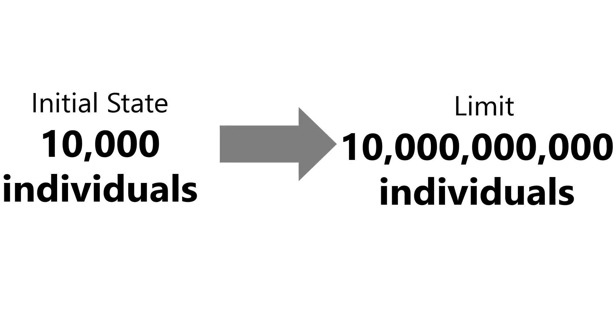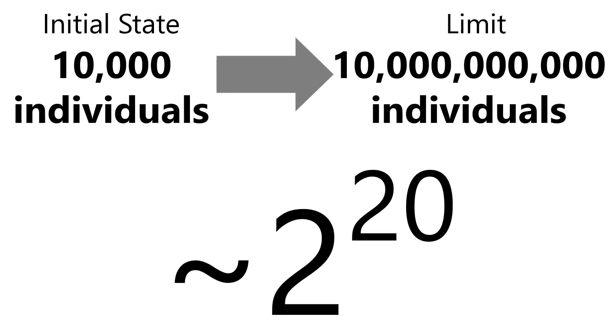To give some real cases: the number of doublings for the human population. The lowest point in the number of humans we've ever had is around 10,000 individuals — the point where humans almost became extinct. The limit is thought to be the maximum number of humans that could be supported given current methods of food production, which is around 10 billion. We find out that the number of doublings is around 20.